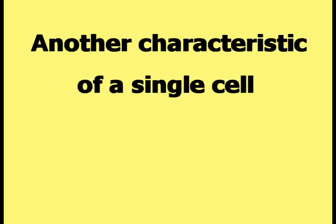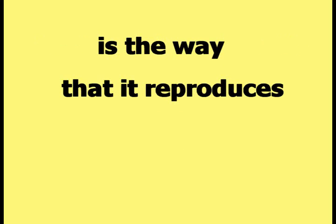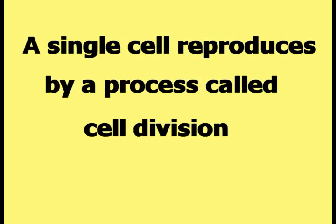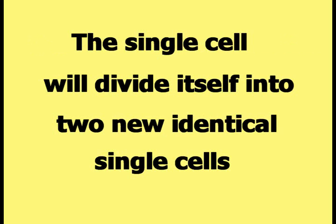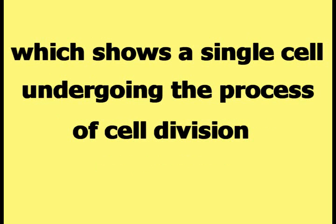Another characteristic of a single cell is the way that it reproduces. A single cell reproduces by a process called cell division — the single cell divides itself into two new identical single cells. Please watch the following video, which shows a single cell undergoing the process of cell division.